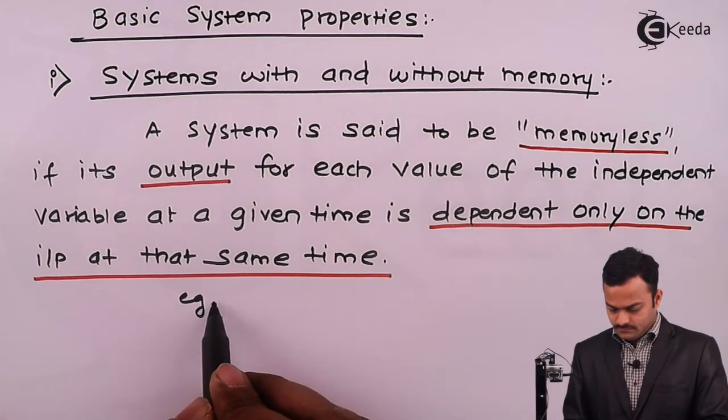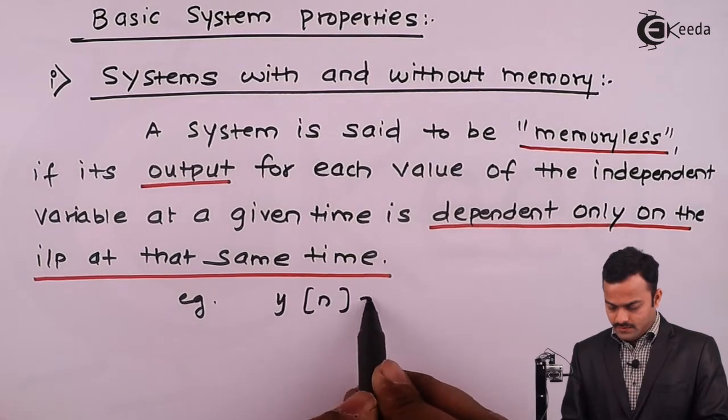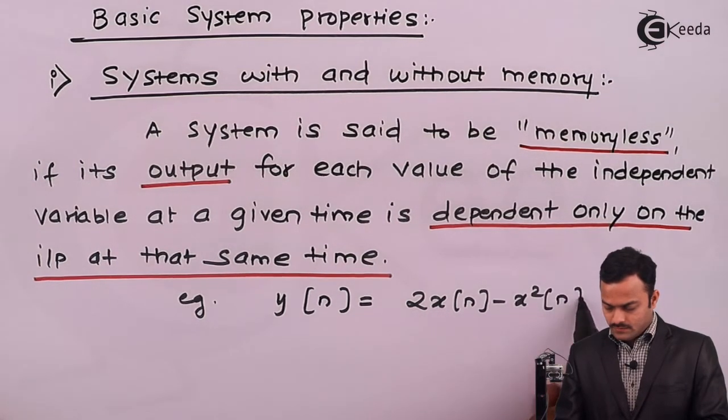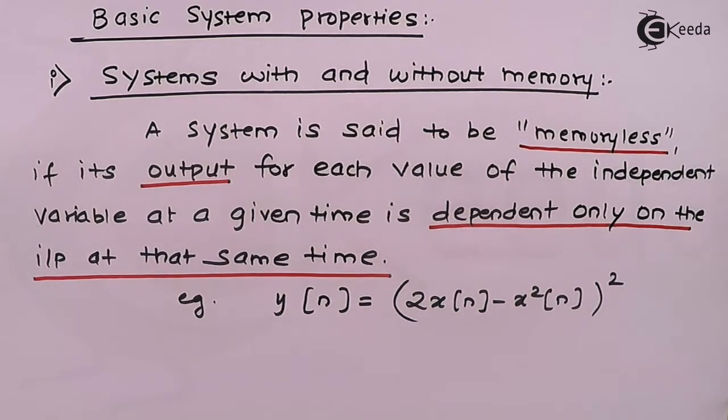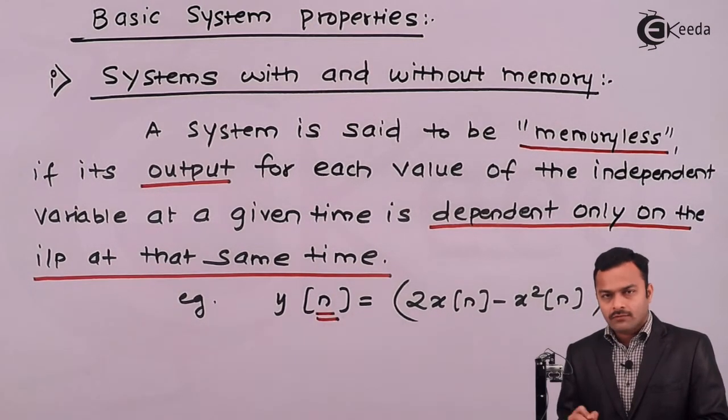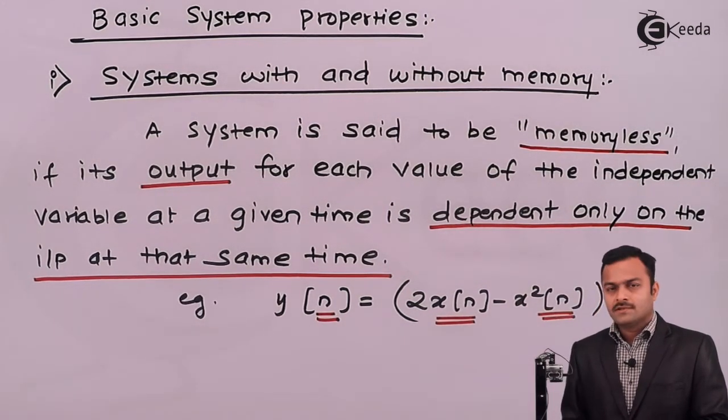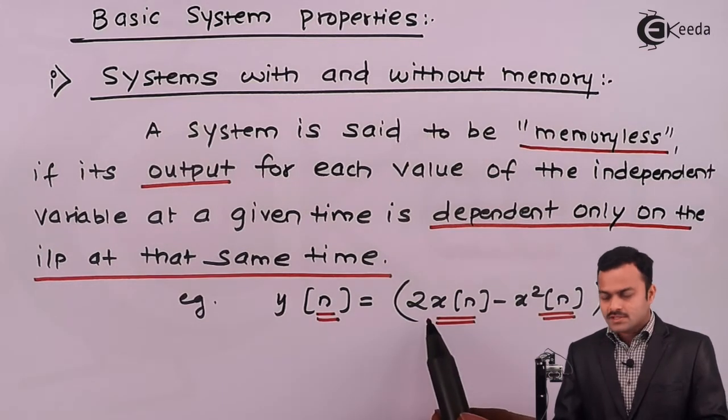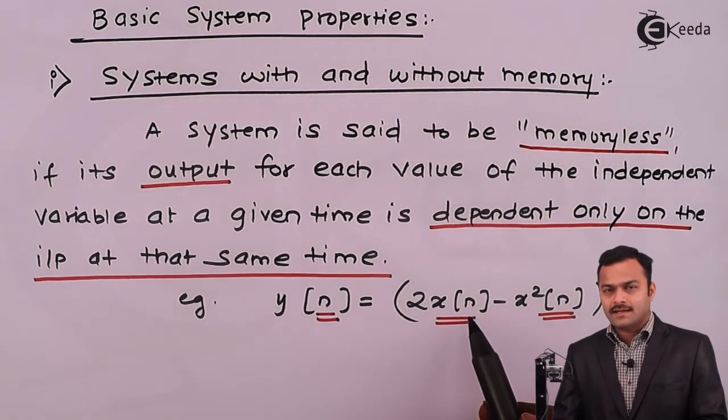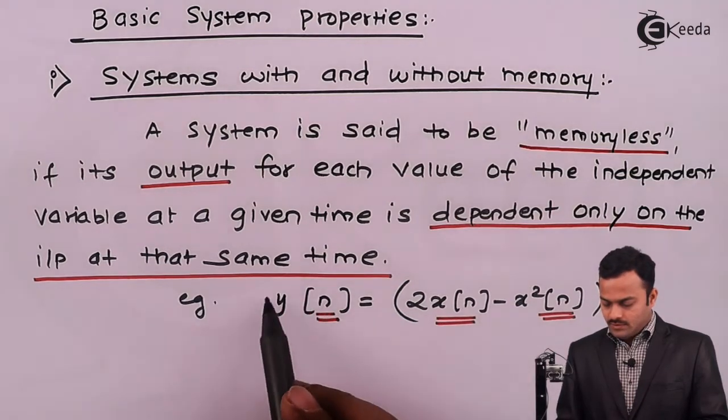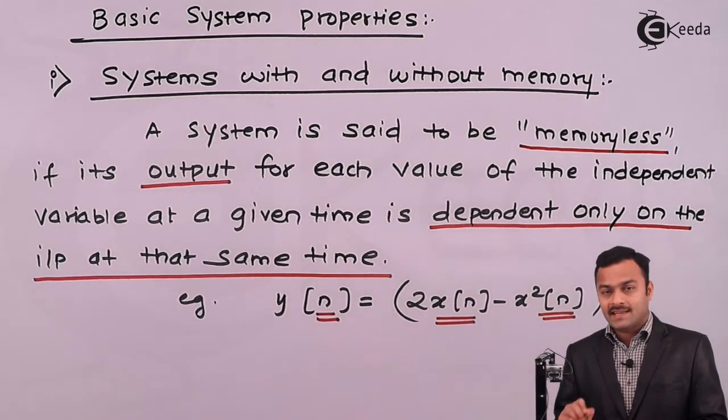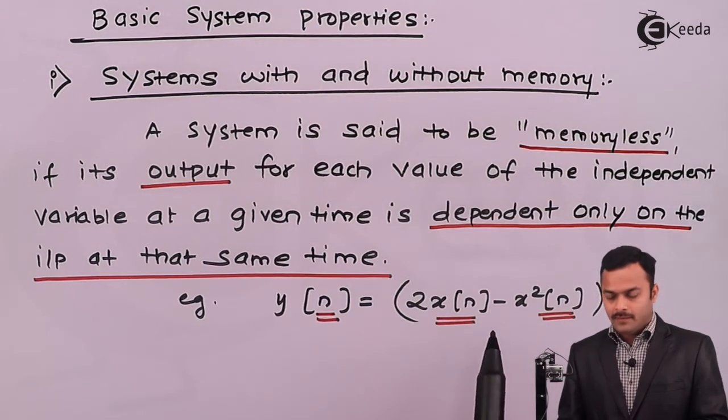Example: y of n is 2x of n minus x square n whole square. Though it is looking like a very complicated equation, see here I want y of n and y of n is obtained only by knowing x of n. Suppose I want y of 0, I just need to know what is x of 0. I want to have y of 2, I just need to know what is there at n equal to 2 in the input signal. So output at any instant depends upon whatever the input is present at that particular instant only. That is what a memoryless system.